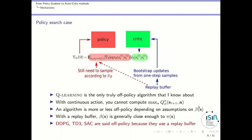Algorithms like DDPG, TD3, and SAC are said to be off-policy because they use a replay buffer. But in fact, this does not provide any guarantee that they will always converge under a specific training regime. If you start with a replay buffer full of very poor samples, then those algorithms will fail. This is the key reason why they are so unstable. Also, samples in the replay buffer are generally close enough to the current policy because the replay buffer is evolving with your policy.